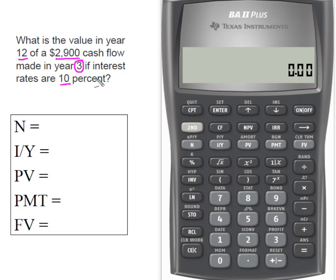I'm gonna use my time value and money keys, so I need to get all of my values. First of all, I need N. N is simply the number of periods we're gonna move it. In this case, we're gonna go from year three to year 10, and so that tells me I'm gonna move that cash flow nine years.